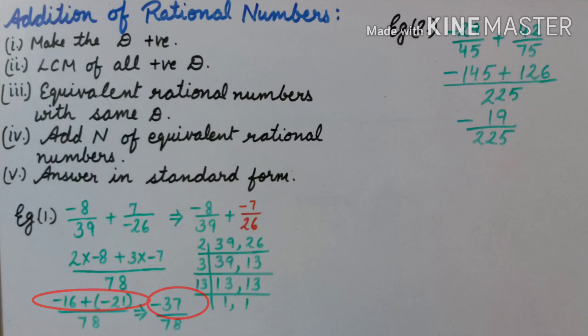Now we will add minus 16 and minus 21. Both are negative integers, so we will add the numbers and put the same sign. That is minus 37 upon 78. As they are co-primes, the answer will remain the same.